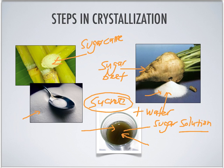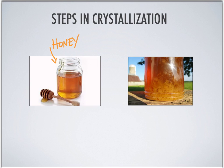Honey is another example of a sugar solution because it contains solid sugars such as sucrose, fructose, and glucose. You may have seen that after storing honey for a long time, some of the sugar actually crystallizes — you can see solids suspended in the liquid honey. This is another example of crystallization starting from a solution.